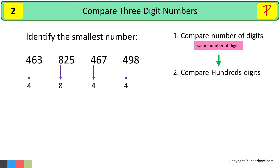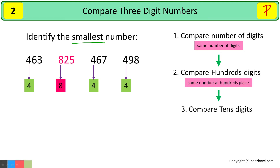Out of these, 8 is the biggest number, so we will not include 825 in next comparisons. The remaining three numbers have the same digit — 4 — at the hundreds place, so we cannot decide which is the smallest. As per the rule, let's compare the digits at the tens place. In 463 we have 6, in 467 we have 6, and in 498 we have 9 at the tens place. 9 is the biggest number.